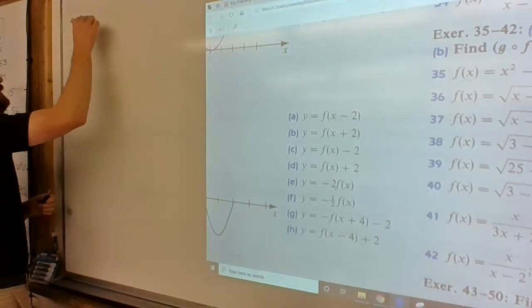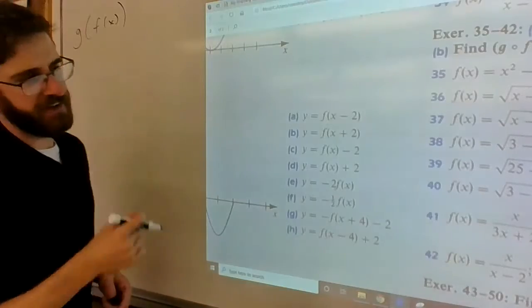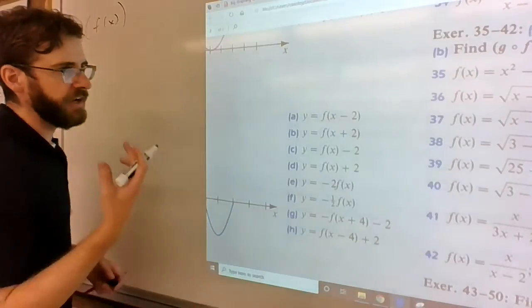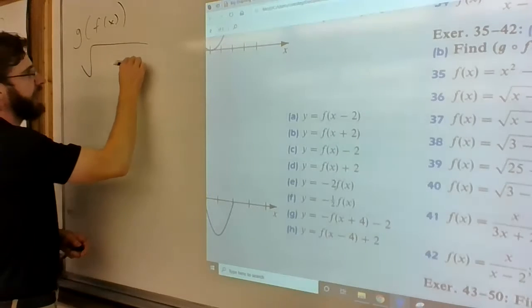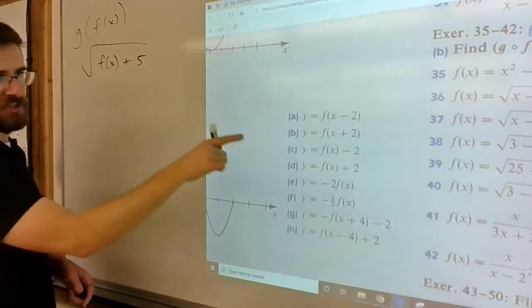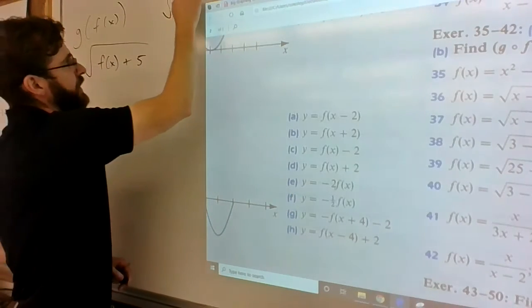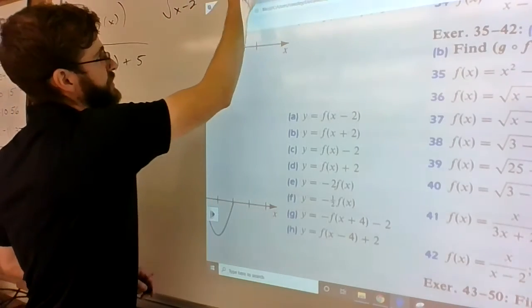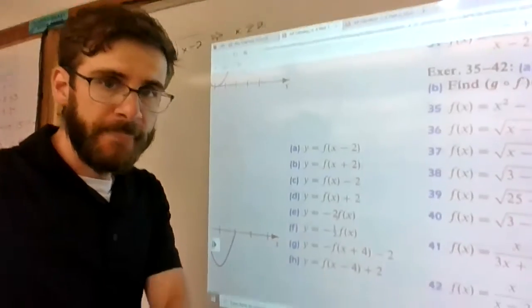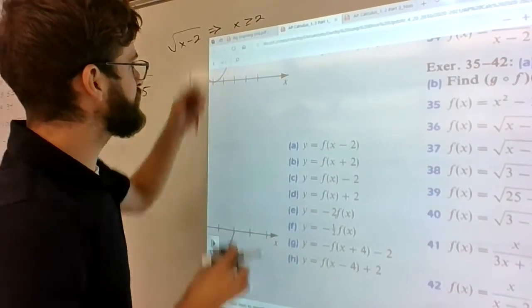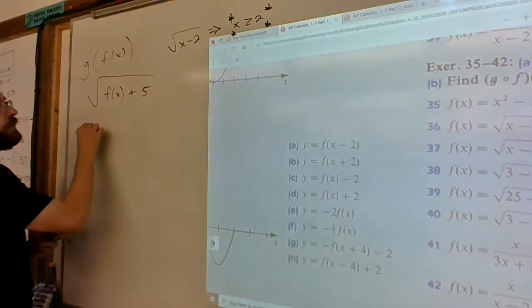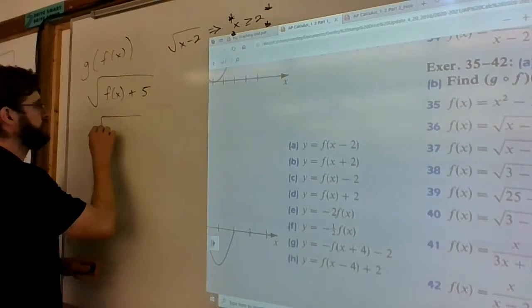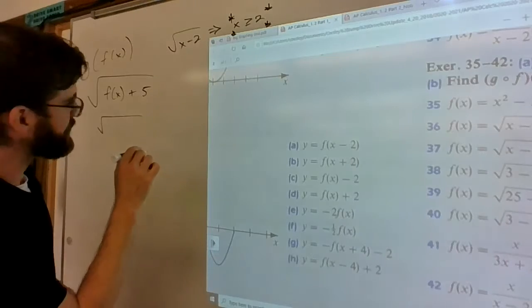Check out g of f. g of f is pretty much doing the same thing. You got √(x + 5). f(x) is in there. f(x)'s pre-existing condition was the fact that it was √(x - 2), which gives us x is greater than or equal to 2. So here's the pre-existing domain condition.